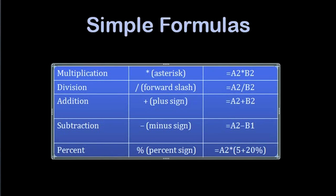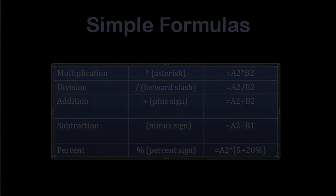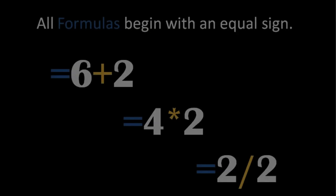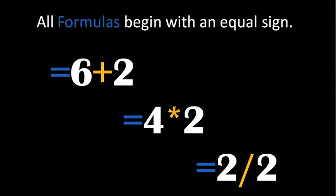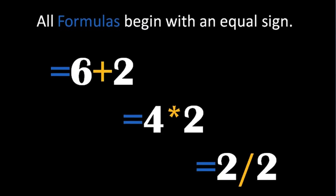In school, you used formulas to calculate math problems like 2 plus 2 equals 4, or 20% off of $100. Microsoft Excel uses these same formulas to perform spreadsheet calculations. A formula is an equation that performs a calculation using values in the worksheets. You're probably used to seeing equations like 2 plus 2 with an equal sign after it, but in Excel, every formula starts with the equal sign.